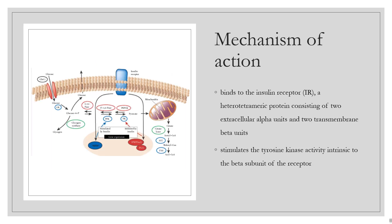The primary activity of insulin is the regulation of glucose metabolism. Insulin promotes glucose and amino acid uptake into muscle and adipose tissues, and other tissues except the brain and liver. It also has an anabolic role in stimulating glycogen, fatty acid, and protein synthesis. Insulin inhibits gluconeogenesis in the liver.